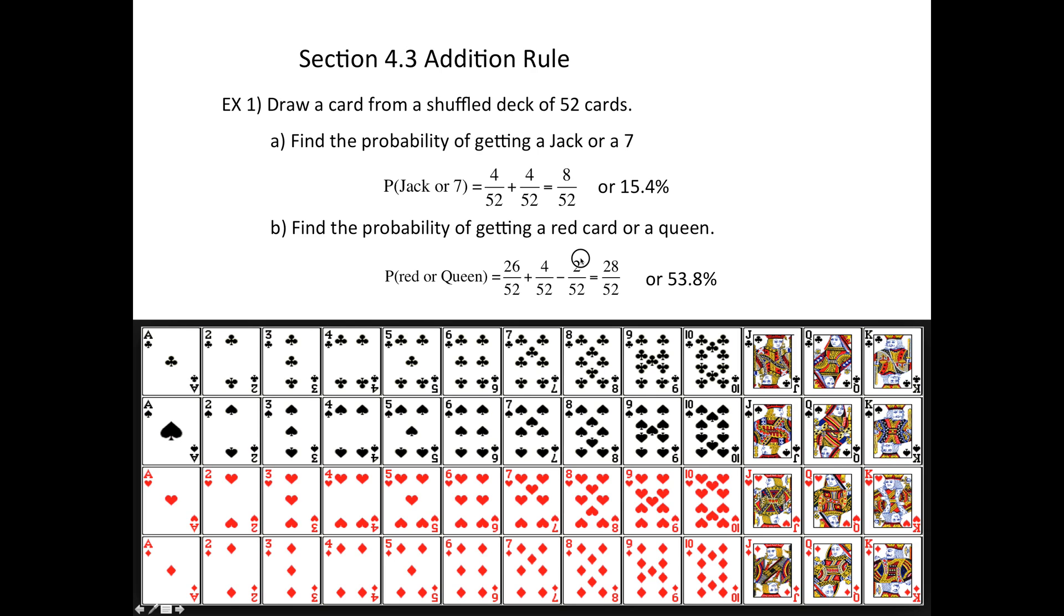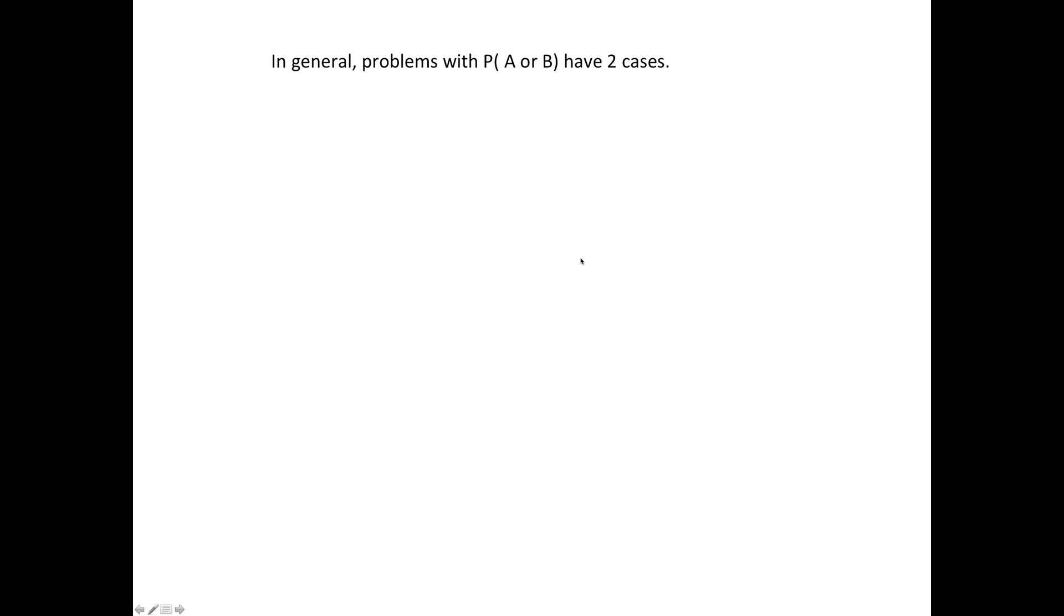So there's those two main cases. One is like the first: there is no such thing as a jack of seven, so the two cases are completely separate from each other. It's called mutually exclusive. There's the jacks, here's the sevens, there's nowhere where they overlap.